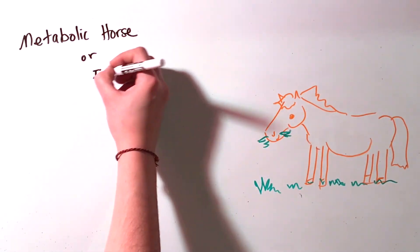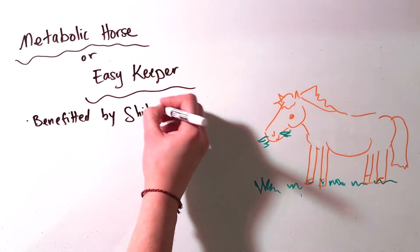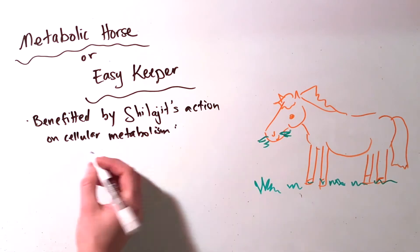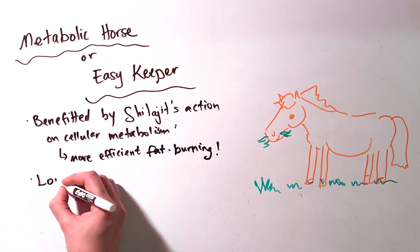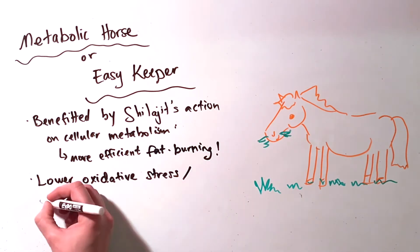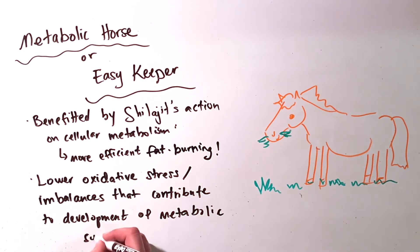Metabolic horses or easy keepers are benefited by shilajit's action on cellular metabolism and are able to burn fat more efficiently. Shilajit lowers oxidative stress and imbalances that contribute to the development of full-blown metabolic syndromes.